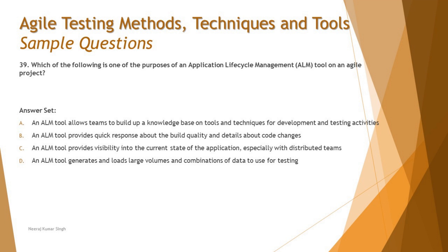Option B is not correct either — this is basically the purpose of a continuous integration tool. CI tools have the capability of early and frequent feedback with respect to build quality and details about code changes. ALM doesn't have any such capability. Option C says: an ALM tool provides visibility into the current state of the application, especially with distributed teams. That is exactly true. ALM has such capabilities where the tool allows you to synchronize and collaborate no matter which location you are in. It is a management tool with the feasibility of collaboration — a shared repository that people can access from multiple locations.